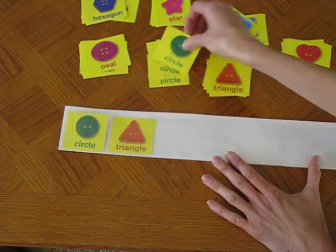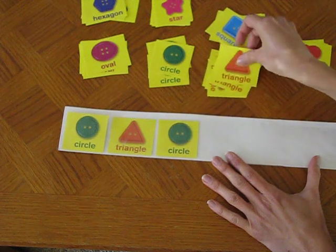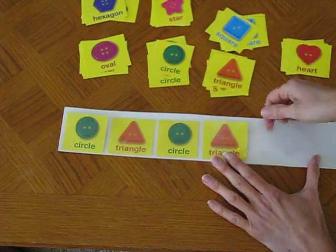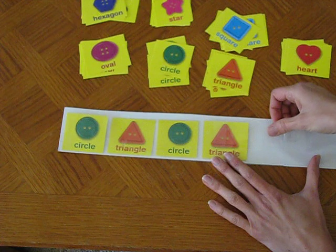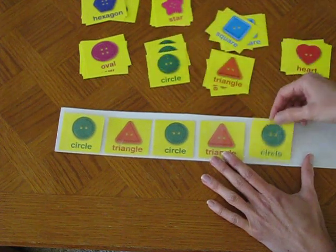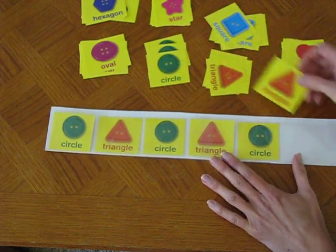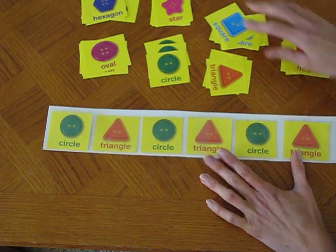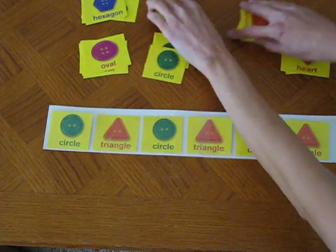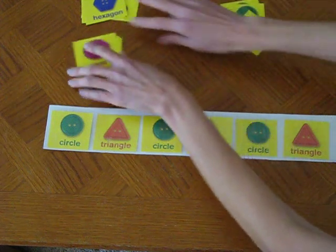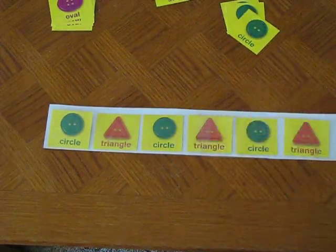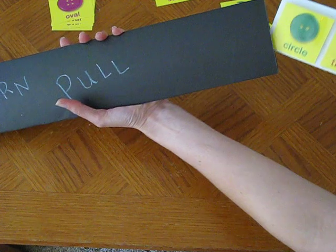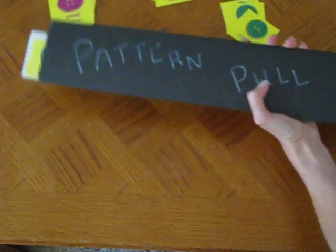Circle, triangle, circle, triangle. This pocket is just made of sheet protectors that I cut up to make strips that would hold them in a little pocket. So I can just put my pattern in here, whatever the pattern might be, and then all I have to do is grab my pattern pull and stick it into the pull itself.